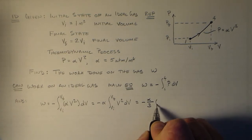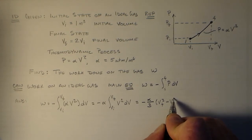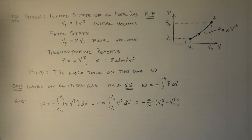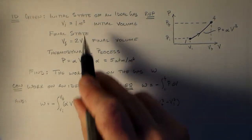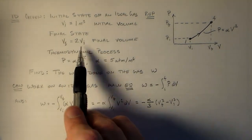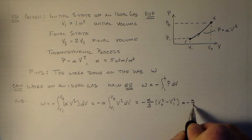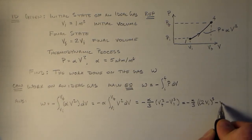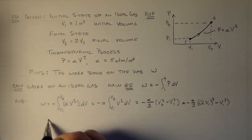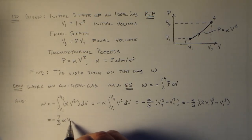So we have minus alpha over three Vf cubed minus Vi cubed. You could resubstitute with the P here if you needed to, but we don't. We have what we need here. Vf is equal to 2Vi, so we can plug that in there. Alpha over three, we have two Vi cubed minus Vi cubed. So that's equal to minus seven-thirds alpha Vi cubed.